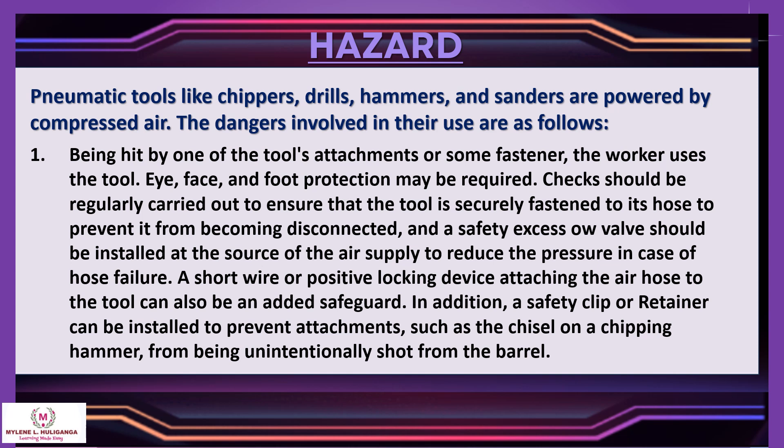Face and foot protection may be required. Checks should be regularly carried out to ensure that the tool is securely fastened to its hose to prevent it from becoming disconnected, and a safety excess-flow valve should be installed at the source of the air supply to reduce the pressure in case of hose failure. A short wire or positive locking device attaching the air hose to the tool can also be an added safeguard. In addition, a safety clip or retainer can be installed to prevent attachments, such as the chisel on a chipping hammer, from being unintentionally shot from the barrel.